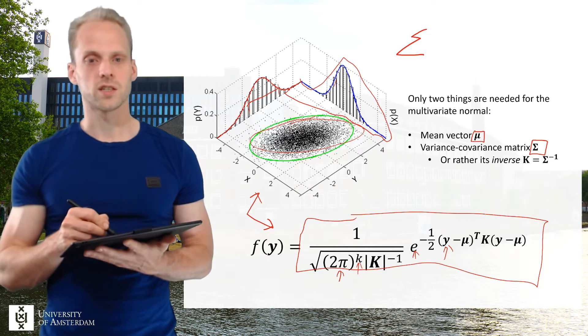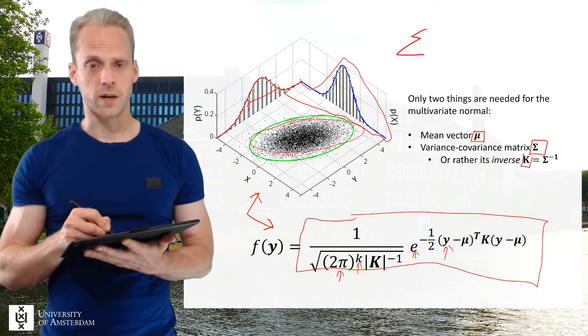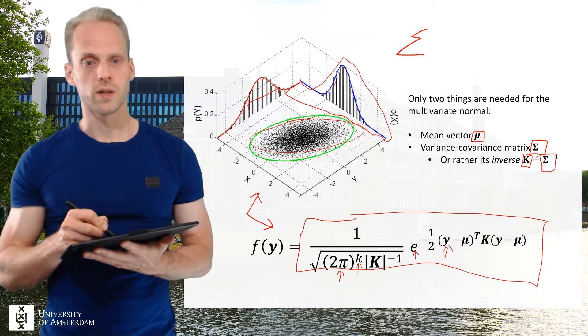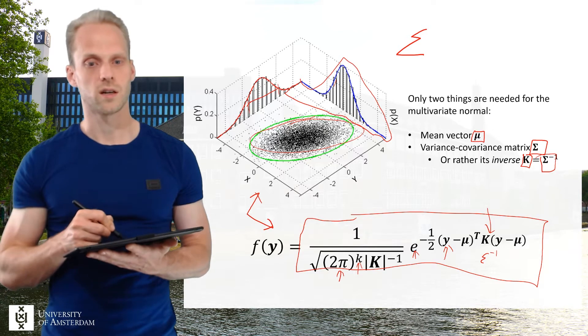So you only have this sigma and this mu, or rather you have kappa, the inverse of sigma, which is used in this equation. So you can also say here sigma inverse.